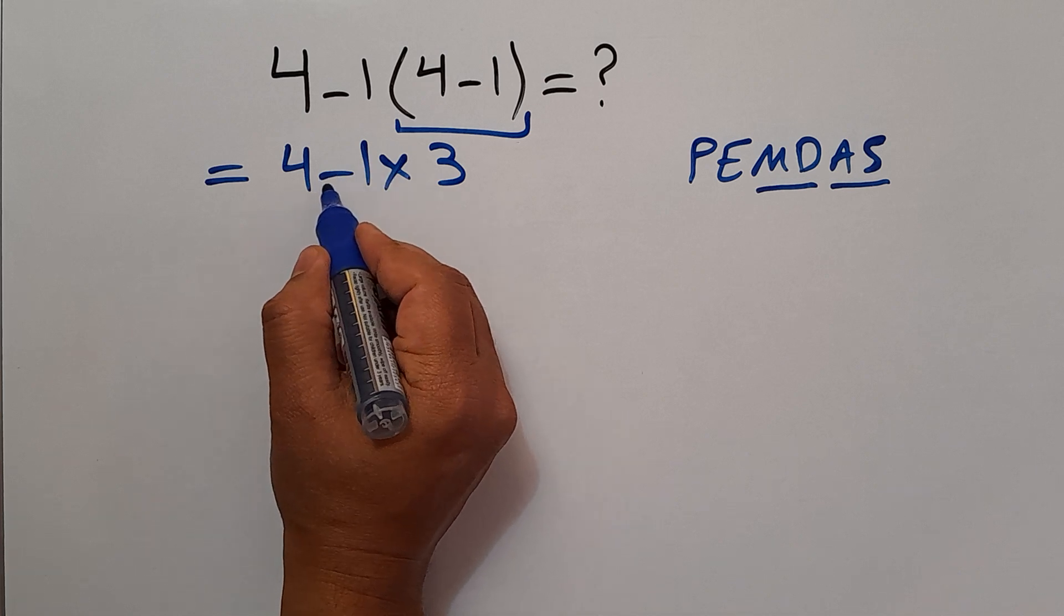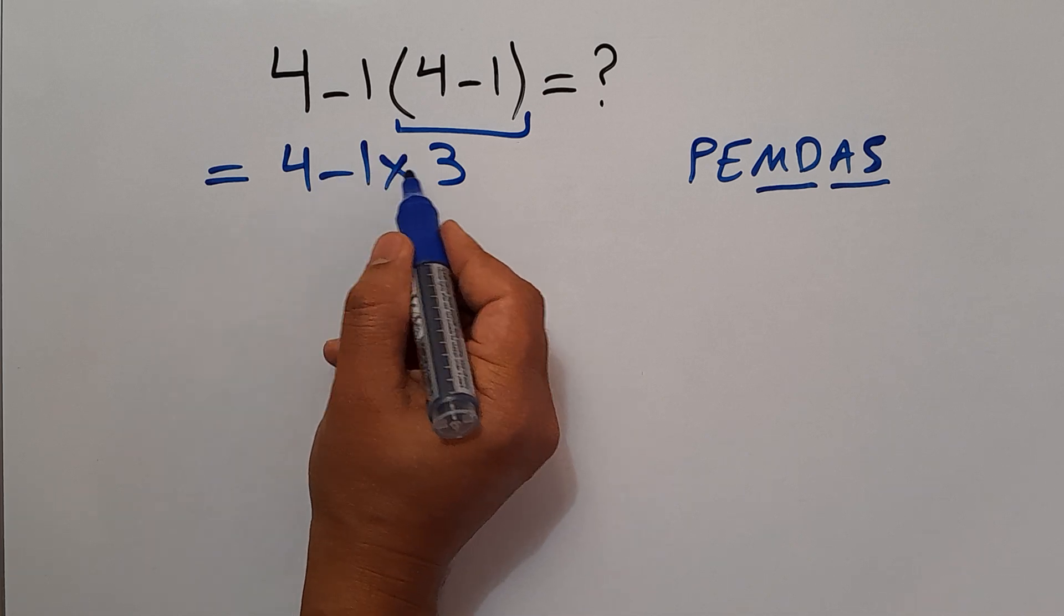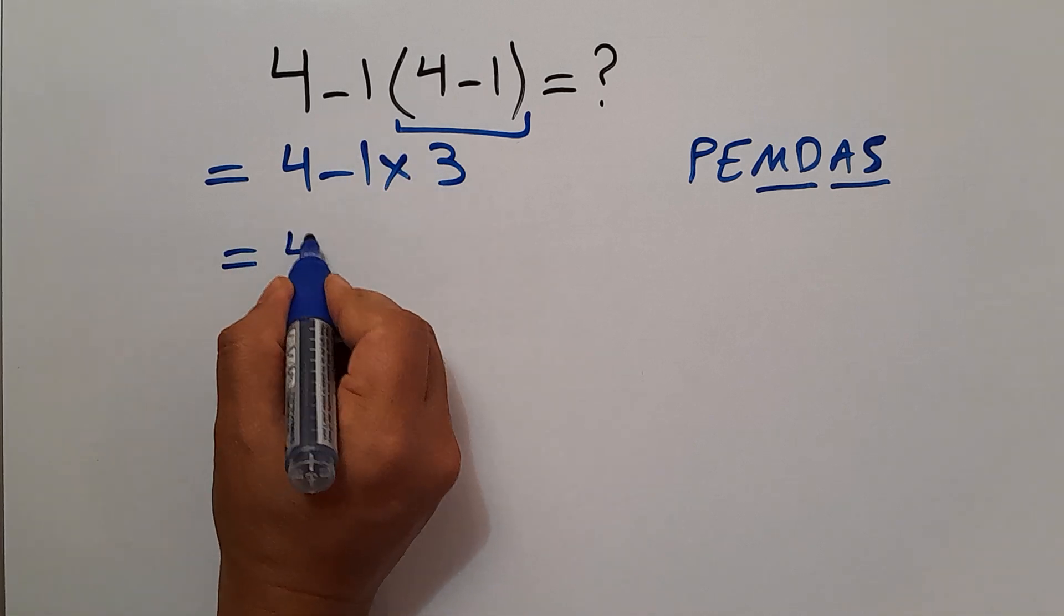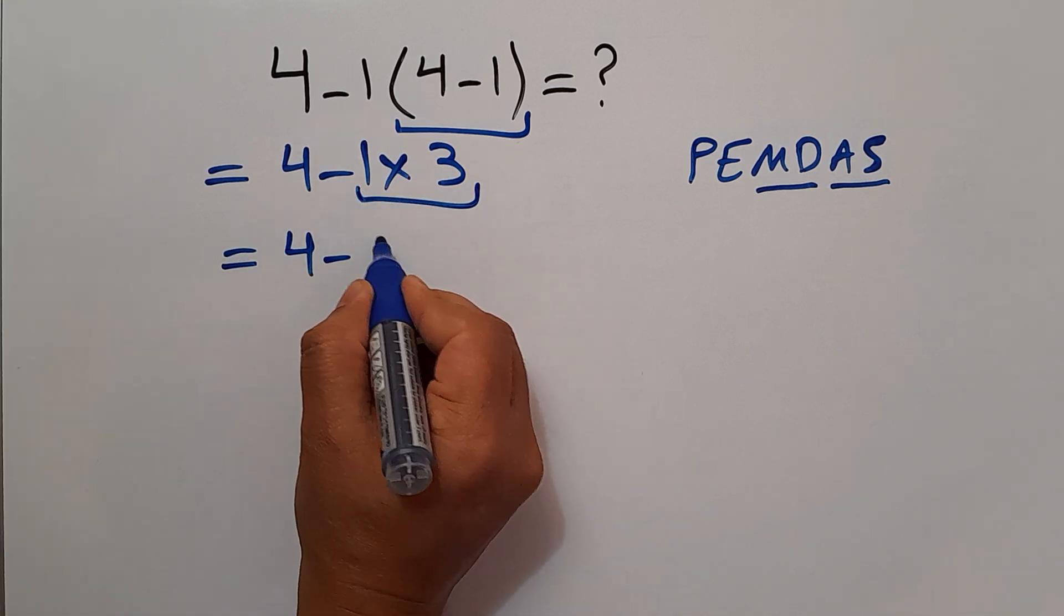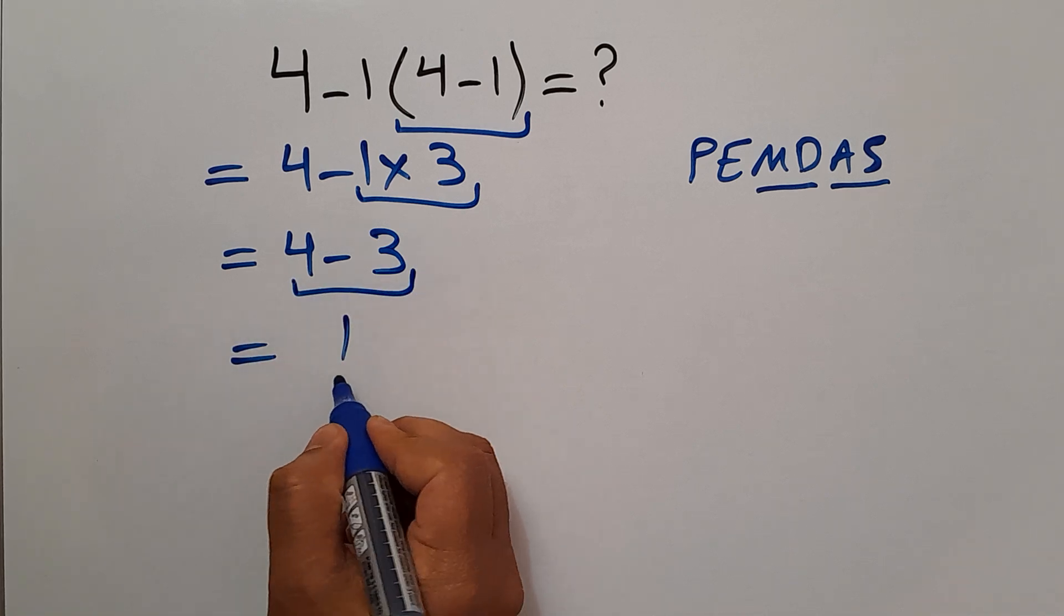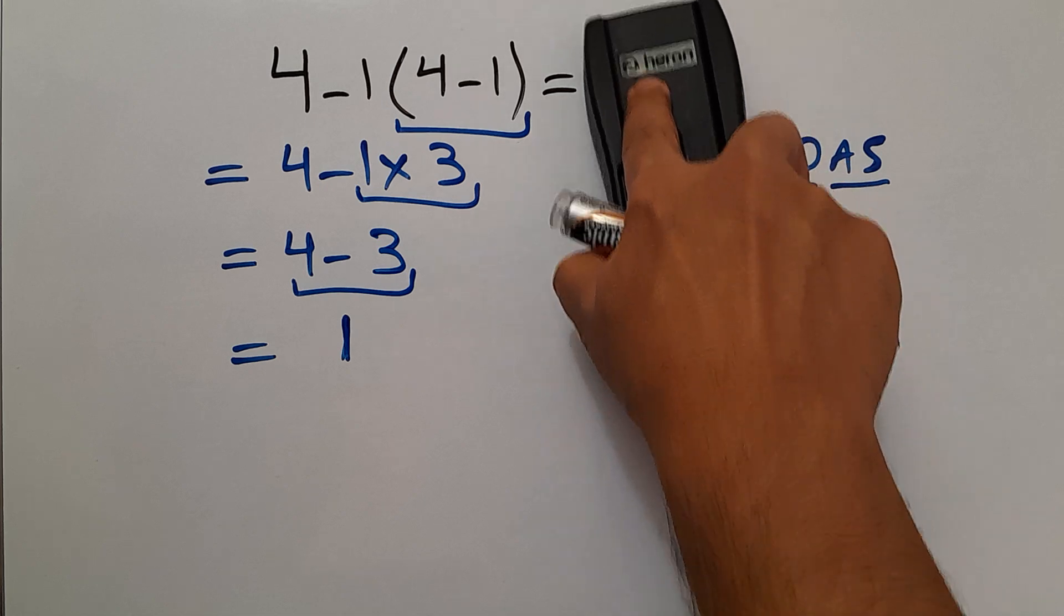1 times 3 equals 3, so we have 4 minus 3, and this is equal to 1. So our final answer to this problem is just 1.